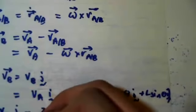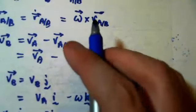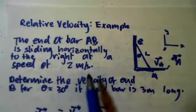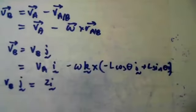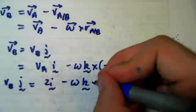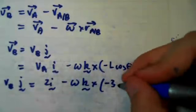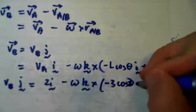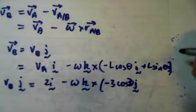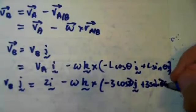So our V of B in the J direction is equal to 2I because we're given in the question statement that the end of bar AB is sliding horizontally to the right at a speed of 2 meters a second. And our angular velocity is unknown, so this is Omega K cross negative 3, and it's at 30 degrees, so negative 3 cosine 30 I plus 3 sine 30 J.